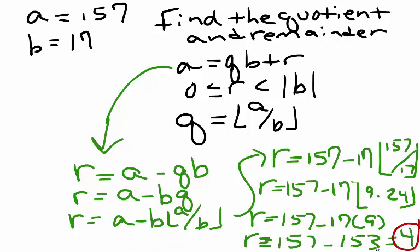We can check by seeing that 157 is equivalent to 9 times 17 plus 4. 157 equals 157, so it checks out.